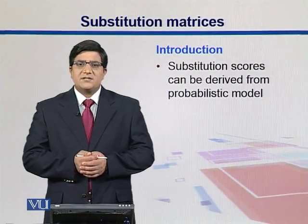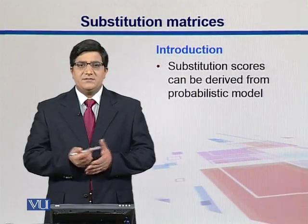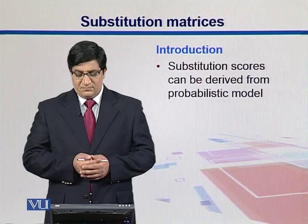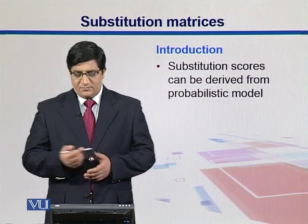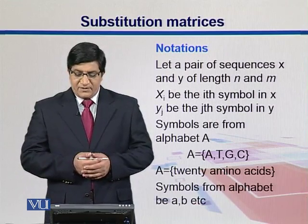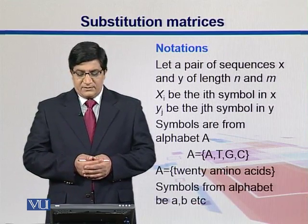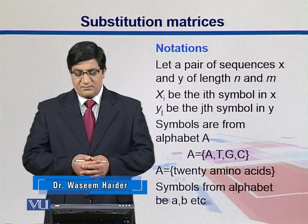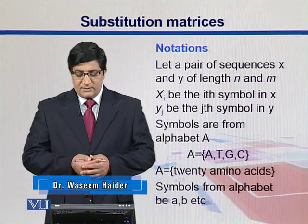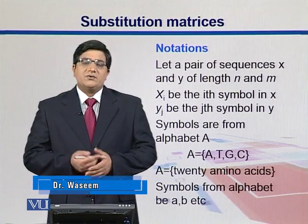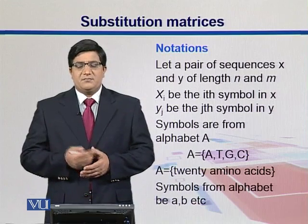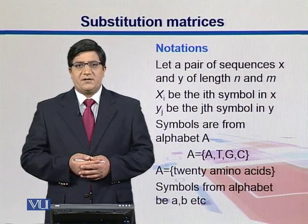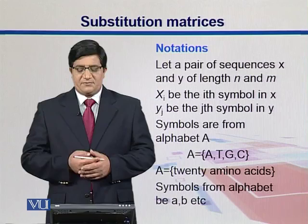Let's look into some statistics — how substitution matrices are derived. We will look into some probabilities and probabilistic models. Let's have a pair of sequences x and y, one of length n and the other of length m. So xi is any symbol in x and yj is the j-th symbol in y. These symbols are derived from alphabets. In the case of DNA, the alphabet is ATGC, whereas for amino acids the alphabet size is 20.